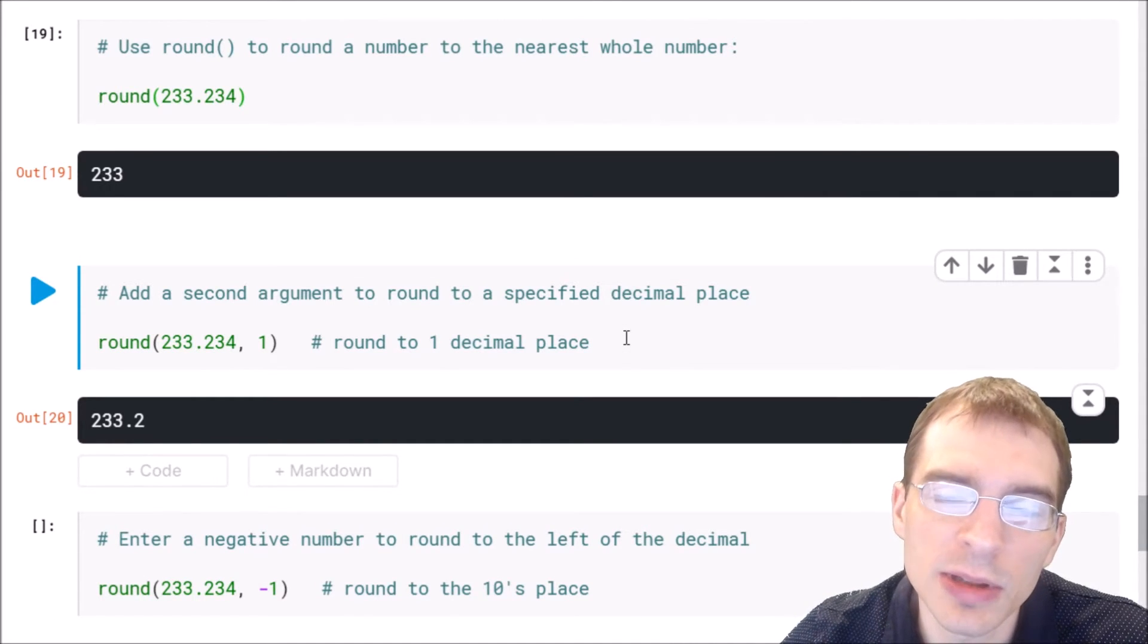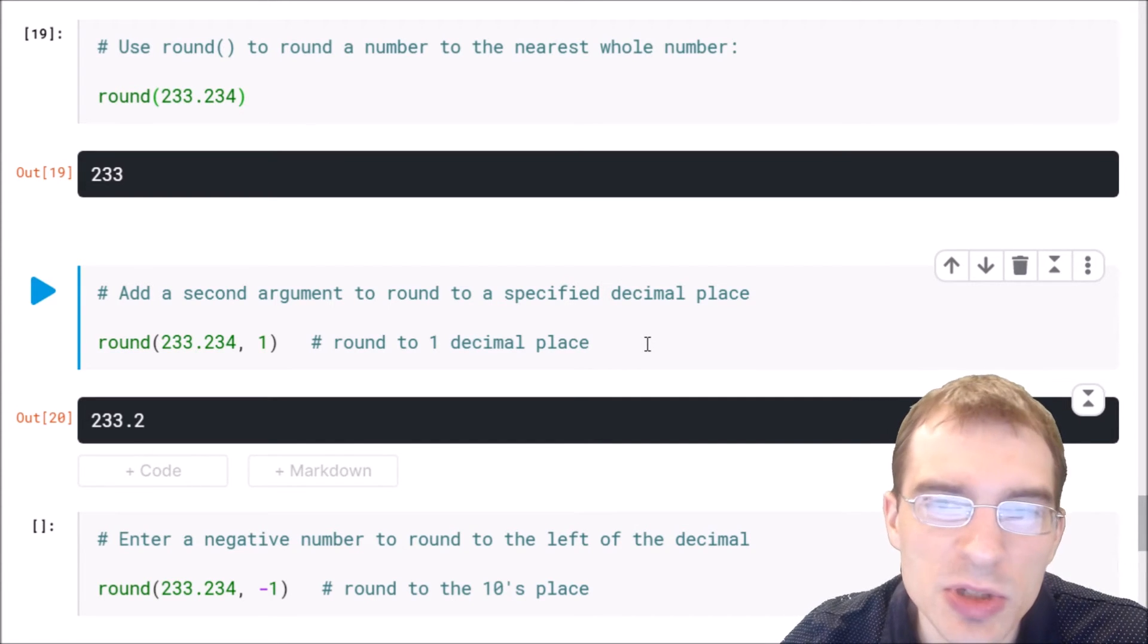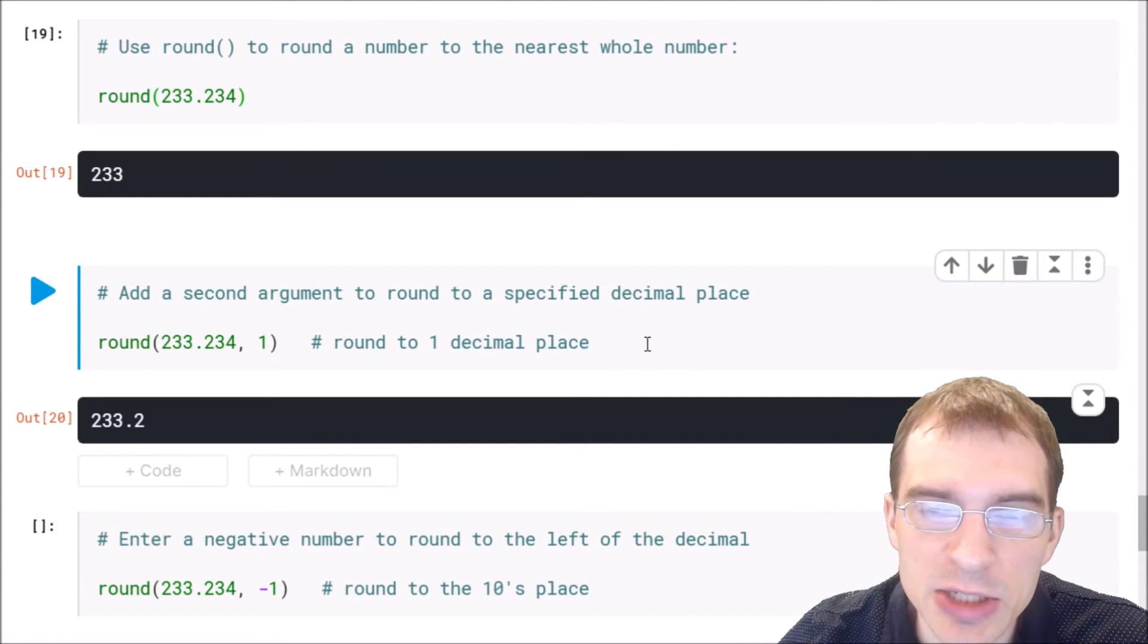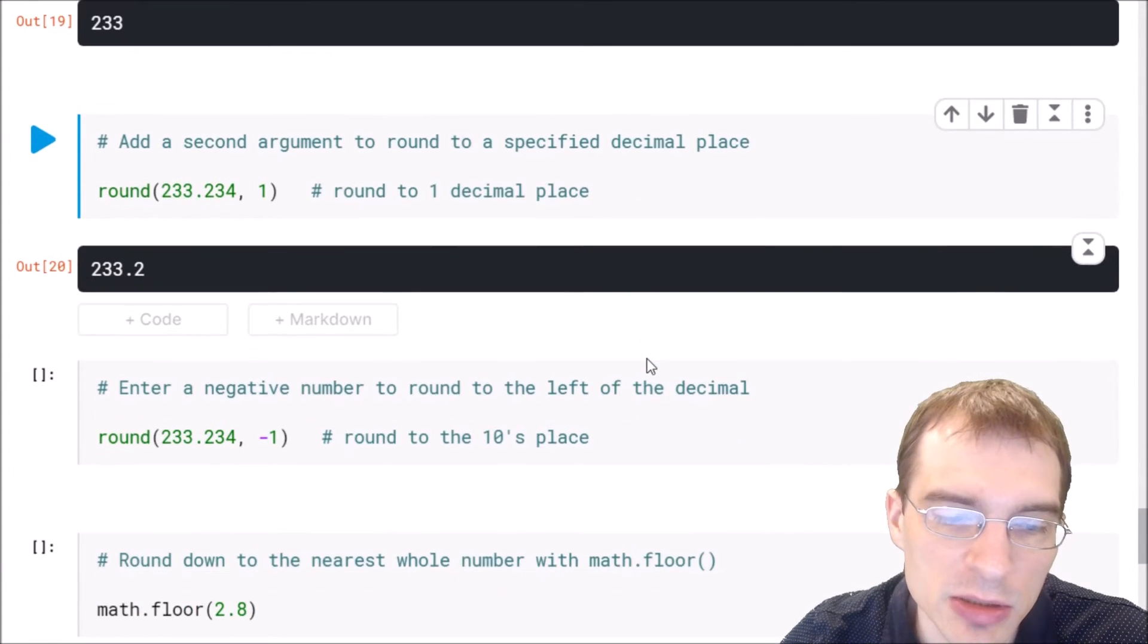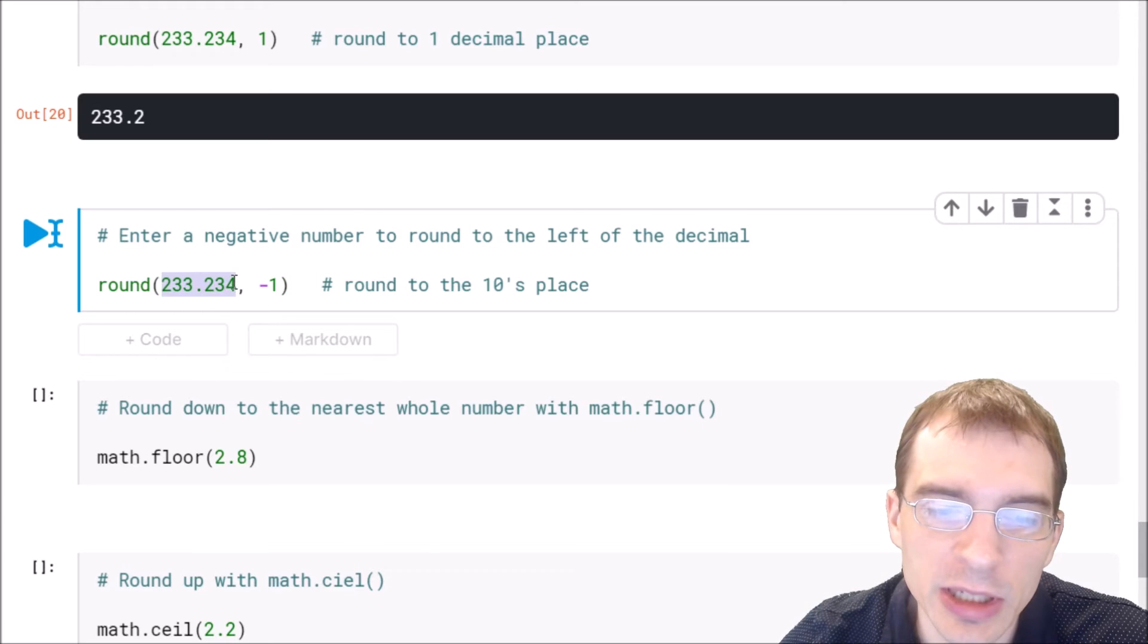You can also round to the left of the decimal point by using negative numbers. You can use this to zero out the ones place or the tens place and round all the way up to the hundreds place or thousands place. In this case, we're going to do round with minus 1, which means we're rounding all the way up to the tens place. So the ones place will be zeroed out here, and we should get 230 from this.